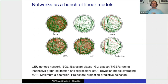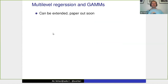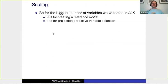Extensions: Donald Williams from UC Davis co-authored a paper using this approach for networks — networks seen as bunches of linear or generalized linear models, finding sparse network structures. We have a paper coming out soon on extensions for multi-level models, GAMs, and so on. On scaling: the biggest number of variables tested is 22,000, taking 96 seconds for creating a reference model and 14 seconds for projection predictive variable selection on a single core. Using GPUs or multiple cores would make this much faster, making larger datasets feasible while keeping the benefits of reference model and projection.